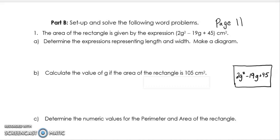Make a diagram — I have the diagram set up already. You need to remember that area is equal to base times height. So when I ask you to find the expression for length and width or base and height, you simply have to factor that trinomial. You're not solving equal to zero or anything like that — you're just trying to break this into two brackets. One of them is going to represent the length and one of them is going to represent the width.